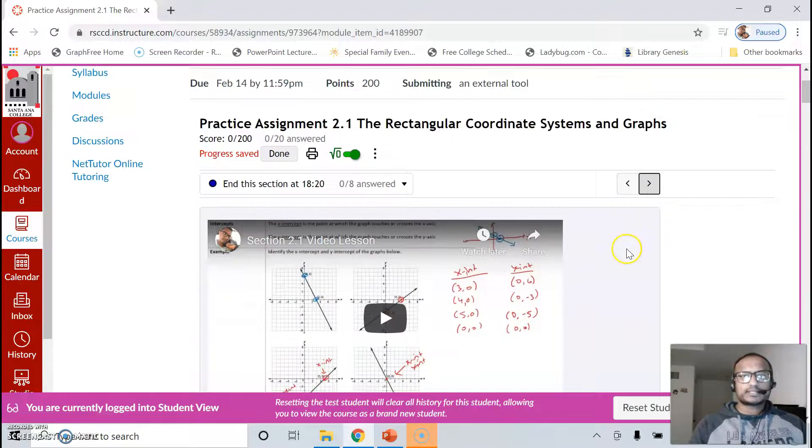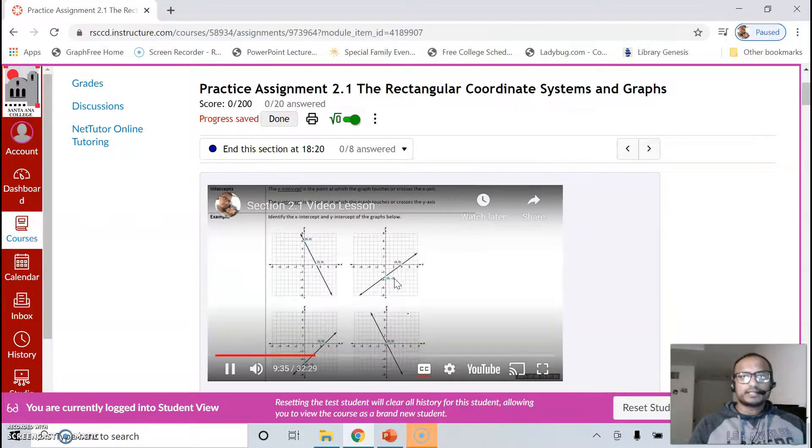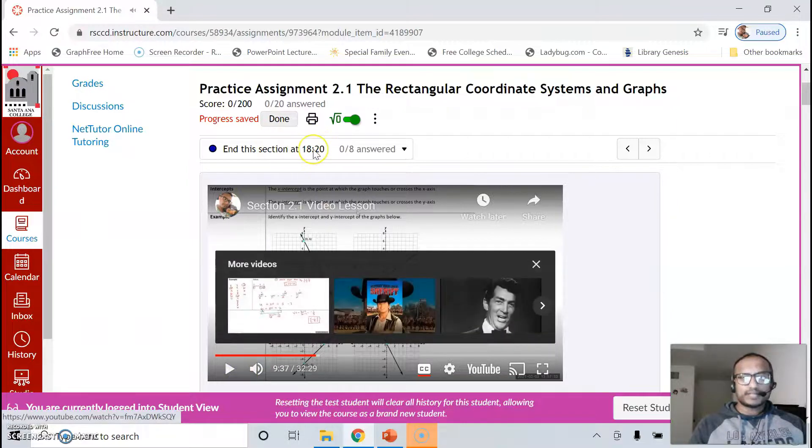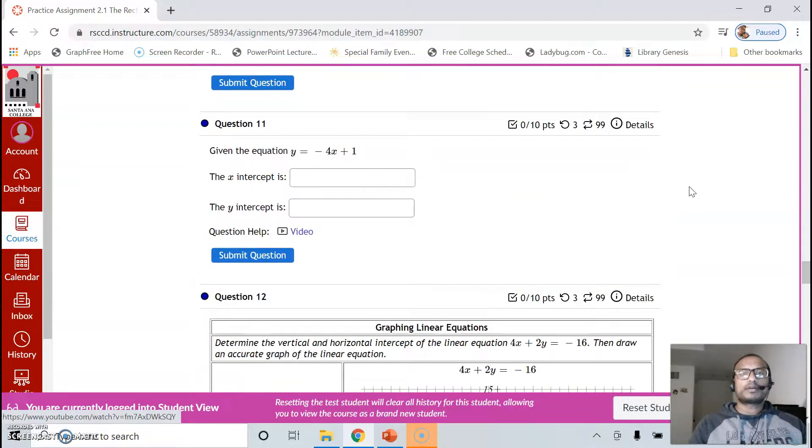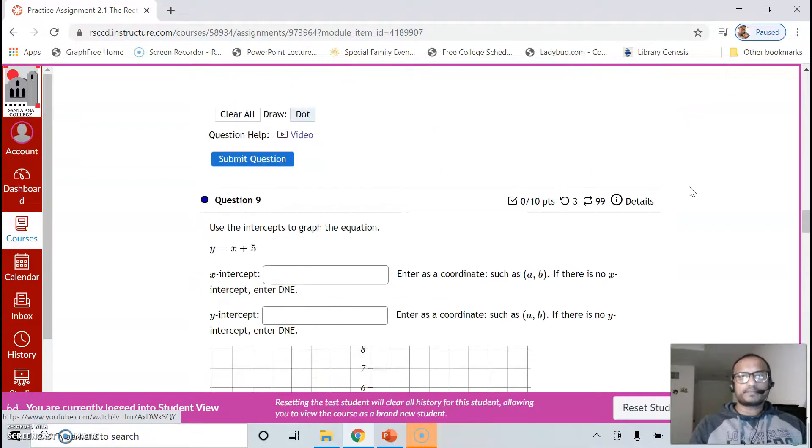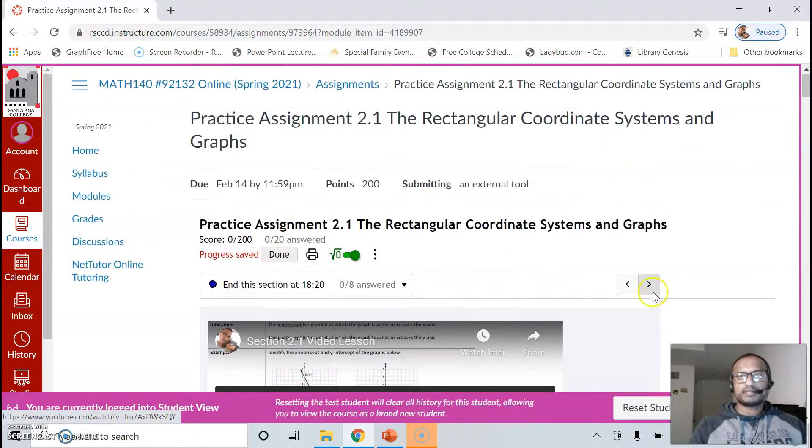There are different parts, so if you click on the next button you will see that there is a second video lesson. So this one says end the section at 18:20. So each section will have a starting point and then the ending point is given there if it's at some weird timing. Once again, watch the video lesson, complete the notes, and work on the questions for that section. Then keep going until all the sections have been completed.